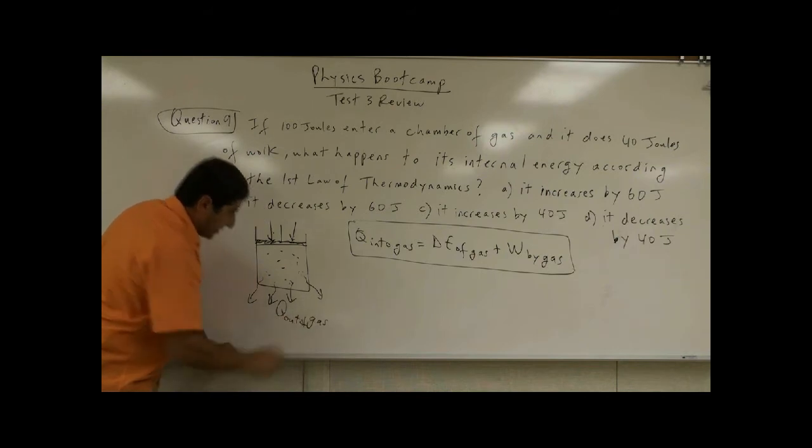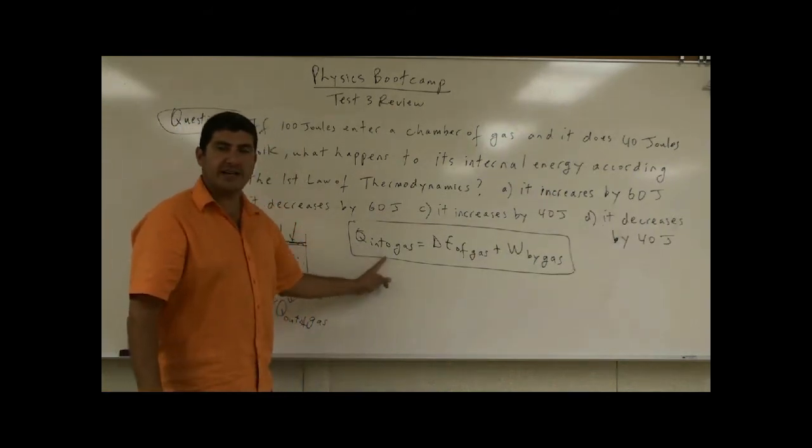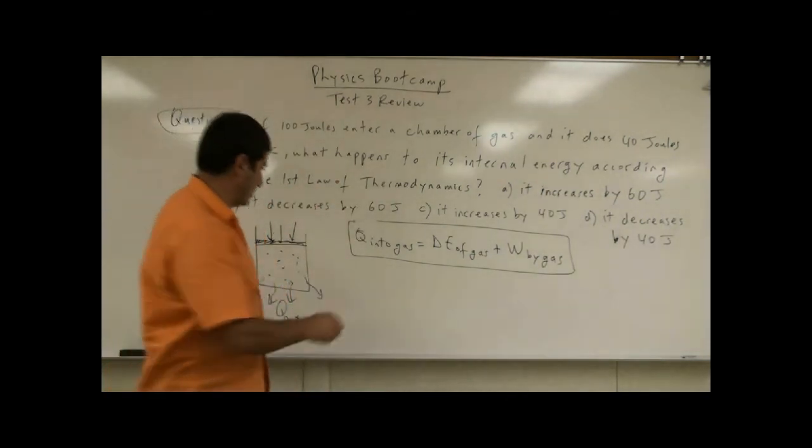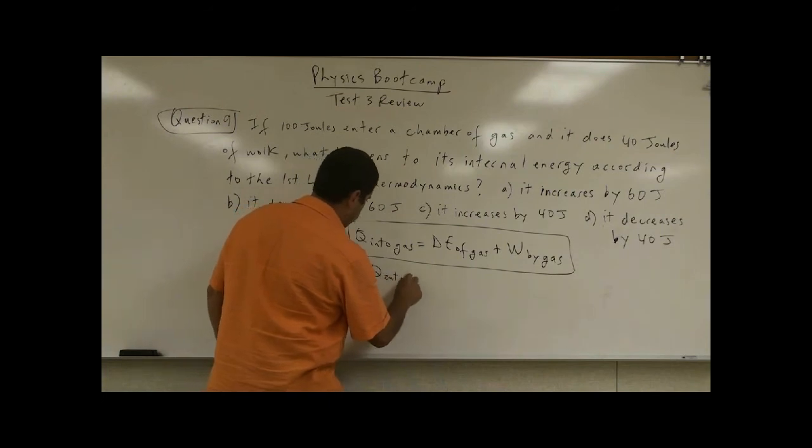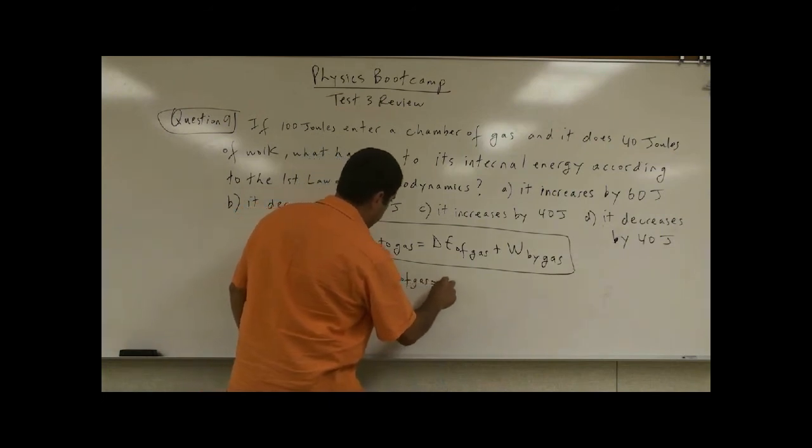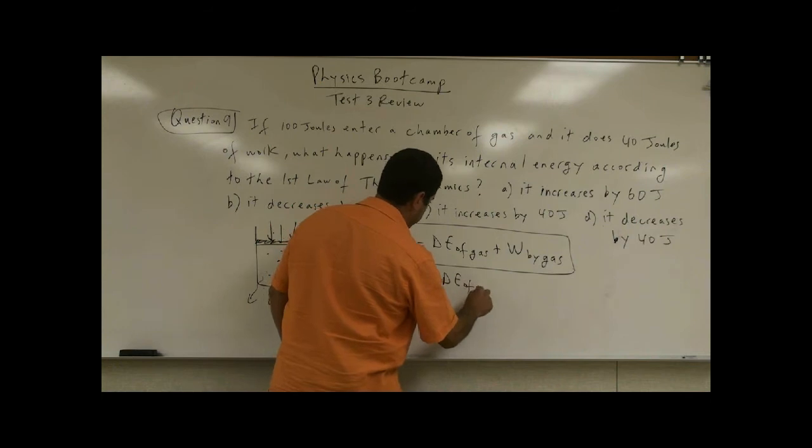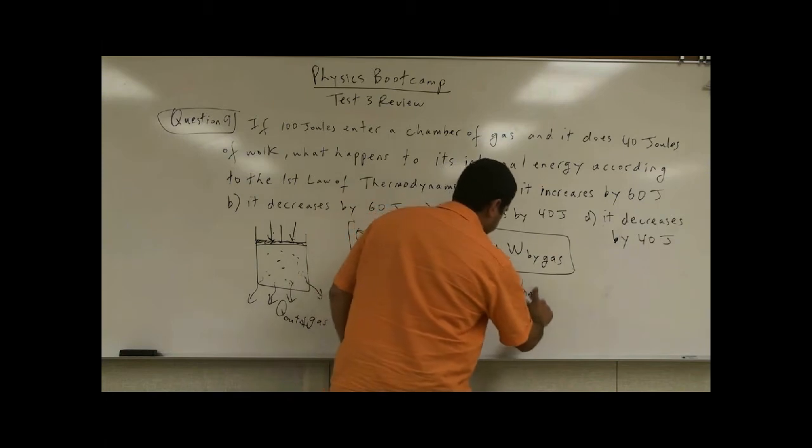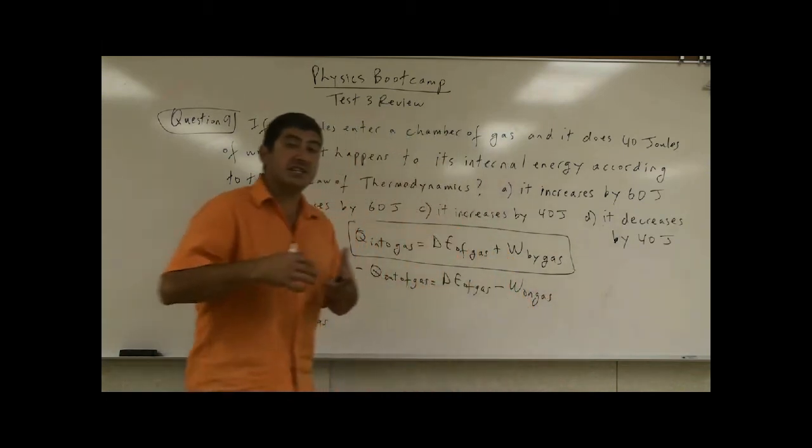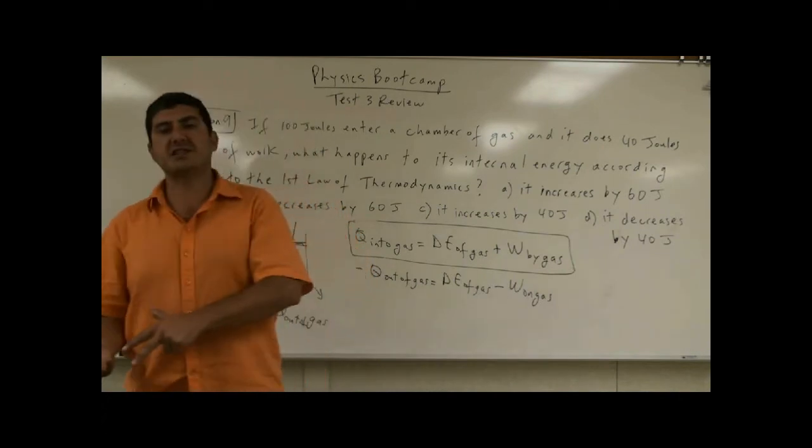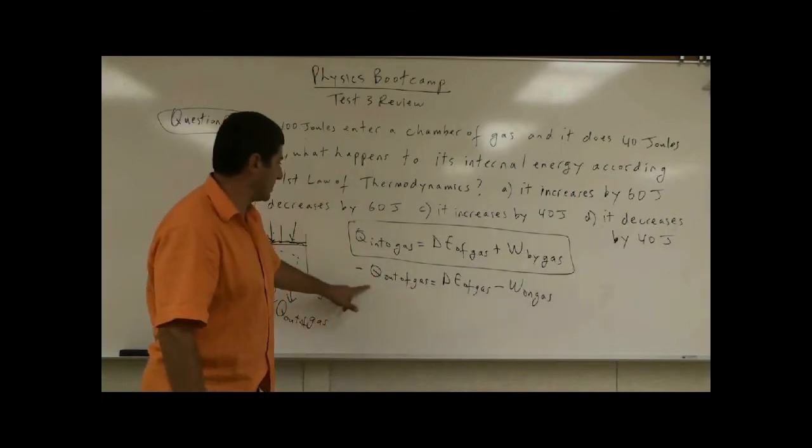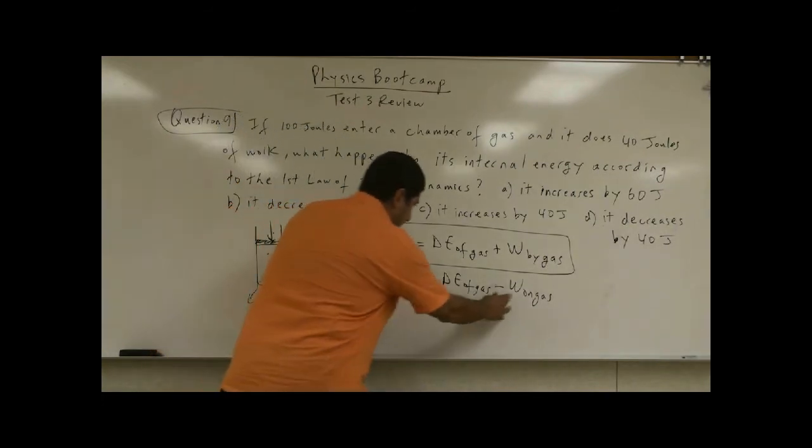So it will be Q out of gas. So this time the Q into gas is equal to negative Q out of gas. So it went out. So negative Q out of gas equals delta E of gas minus work done on gas. Why? Because this time I did positive work on the gas. The gas did negative work.